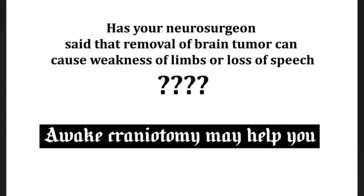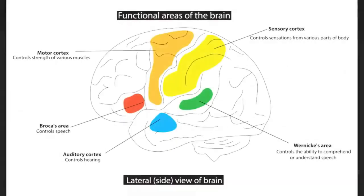Before I explain awake craniotomy, let me explain the functional areas of the brain. Of course, all parts of the brain are functional, but some parts are more functional than others. For example, the area marked in red is called Broca's area, and it controls one's ability to speak.